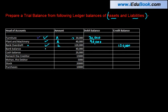Similarly, bank balance — if you have money in the bank, it's an asset. So we will put it in the debit balance column. Cash balance — cash is again an asset, and an asset has a debit balance.